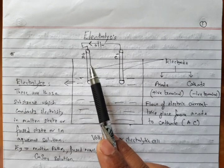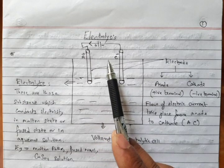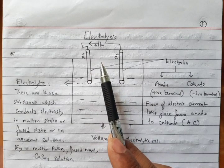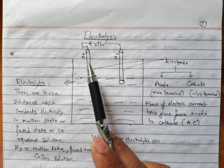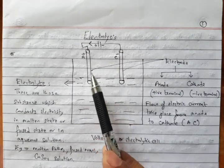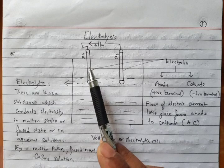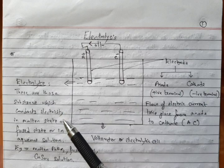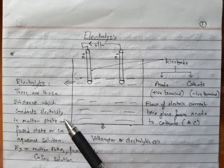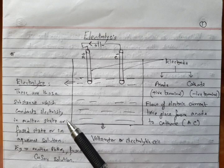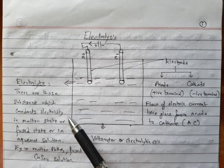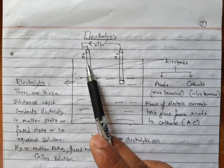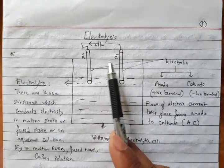You may get confused about which is anode and which is cathode. So always remember: in alphabetical order A comes before C. And when you say positive and negative, positive comes first. Whenever you say God and devil, you say God first — not devil and God. Similarly, we write positive first, then negative.